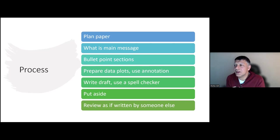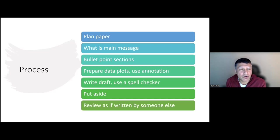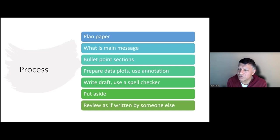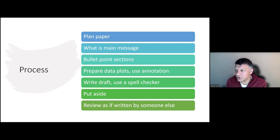In terms of process, it's really important to plan and think about the main message. You'll understand the main message when you have a clear articulation of the aim and understand what your results are telling you. Bullet point your sections, prepare your results section very well, think about what the main message should be, go back and fill in the introduction and methods, and then sit back and think about the discussion. Spend a lot of time considering your data plots and use annotation where you can.